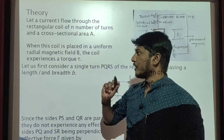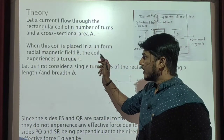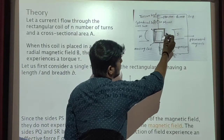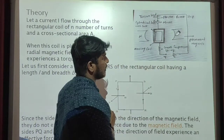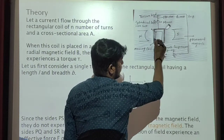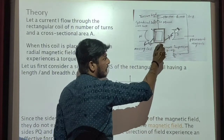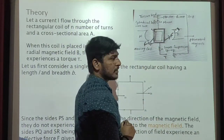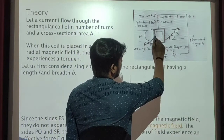Now let us see the second point. When this coil is placed in a uniform radial magnetic field B, the coil experiences a torque. In the block diagram, you can see that this is the copper coil placed between the two magnetic poles which produce the radial magnetic field. Due to this radial magnetic field, this copper coil experiences force on two sides — one is out of the board and another is into the board.